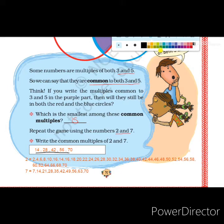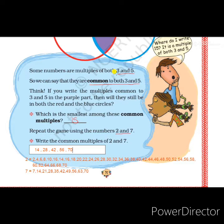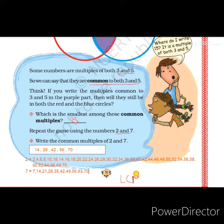Just as we did with 3 and 5, we can make two circles, write the common multiples in the middle portion, multiples of 2 in the 2-circle, and multiples of 7 in the 7-circle. Among the common multiples, the smallest is 14. So the LCM of 2 and 7 is 14 — the Lowest Common Multiple is the LCM, and here it is 14.